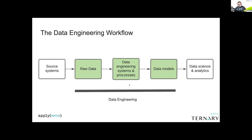The data engineering workflow: data engineering sits between systems that generate data and downstream use cases like data science and analytics. The job of a data engineer should be to get raw data, process it, maybe create data models — whether that's a star schema, raw tables for analysis, or data for machine learning — and make these useful for data scientists and analysts. Basically: take raw data, do something with it, and make it useful for downstream users.